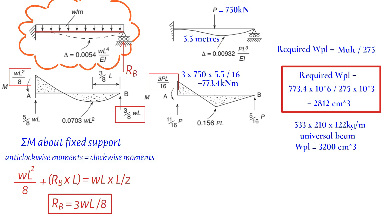Now, let's ensure that the selected beam can withstand the shear forces involved. The maximum shear force, which is equal to 11 divided by 16 times the point load, corresponds to the maximum reaction force. By substituting the values, we find that the maximum reaction force, denoted as RA, is 516 kN.